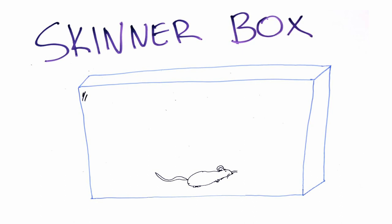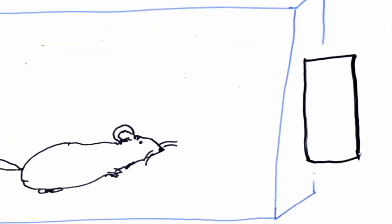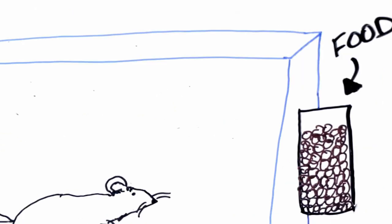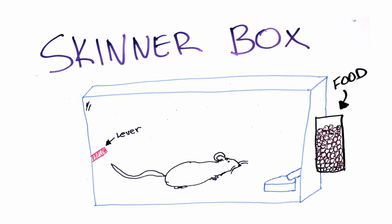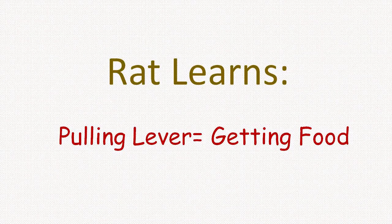Skinner developed a very famous experiment where he created a box — known as a Skinner box — in which he set up a condition for a rat. He placed a lever, a bowl, and a cylinder with pellets of grain inside. He let the rat stay in this box for a long time. As the rat roamed around it would get hungry, and eventually it accidentally pressed the lever, discovering that a pellet was delivered into the bowl. The rat kept doing the same thing and finally learned that pressing the lever gets food.